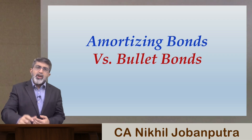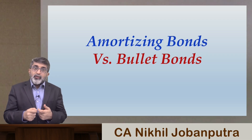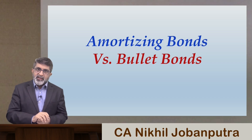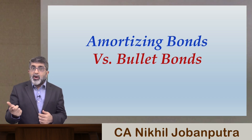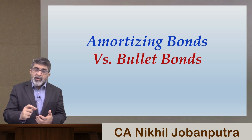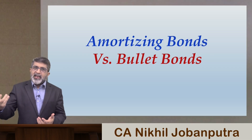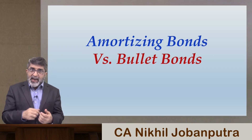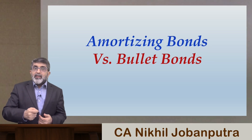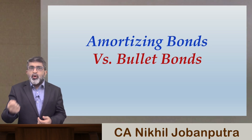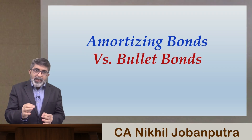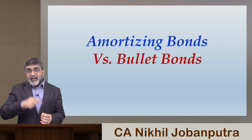Reinvestment risk applies not to bullet bonds but to amortizing bonds. Every time the bond offers cash flows to the investor, those cash flows need to be reinvested. If market interest rates are declining, you will have to reinvest at lower and lower rates each time you receive a cash flow. So reinvestment risk is very high for amortizing bonds, while credit risk is high for bullet bonds.